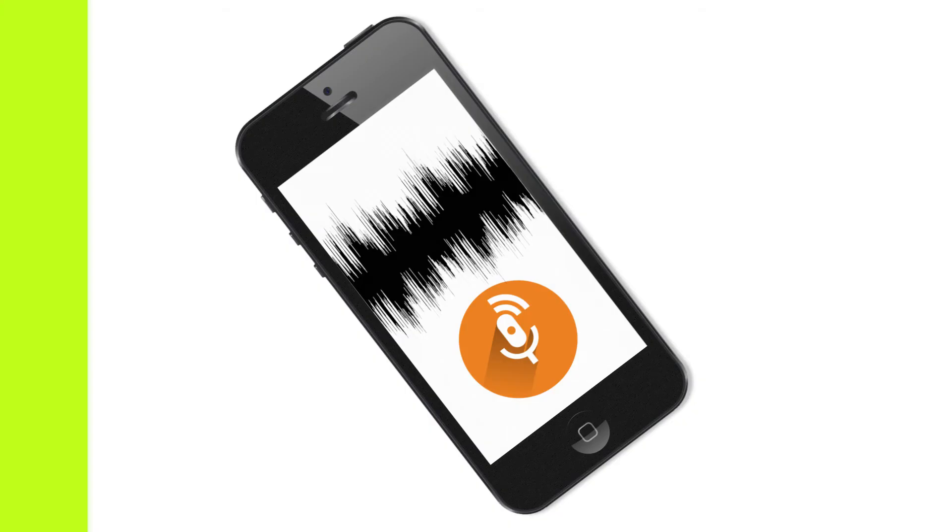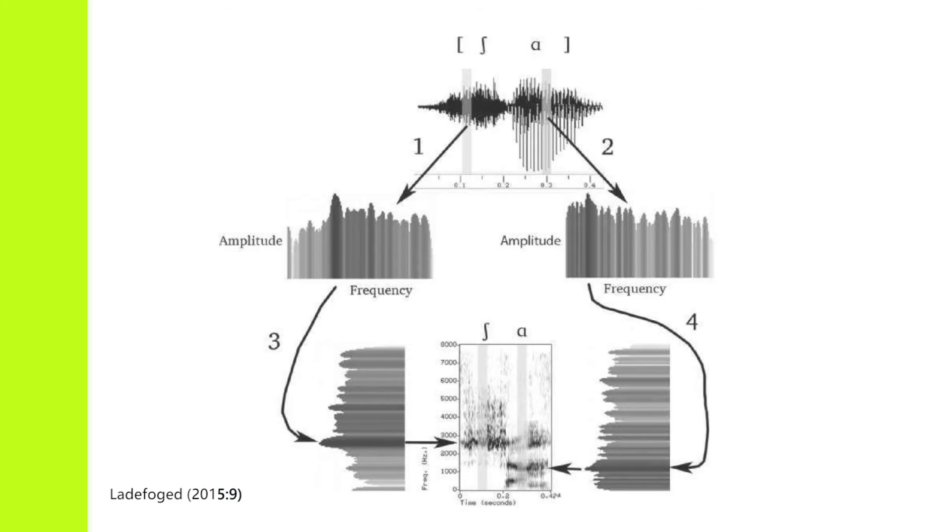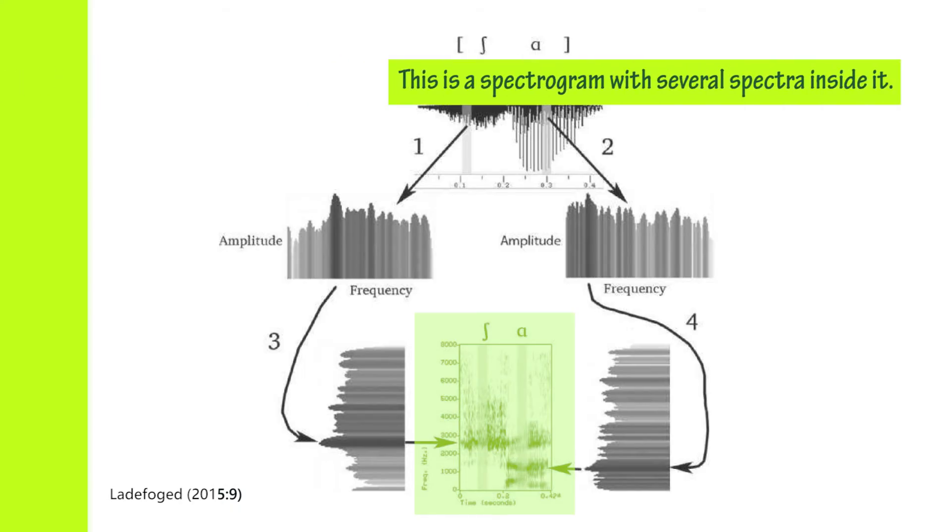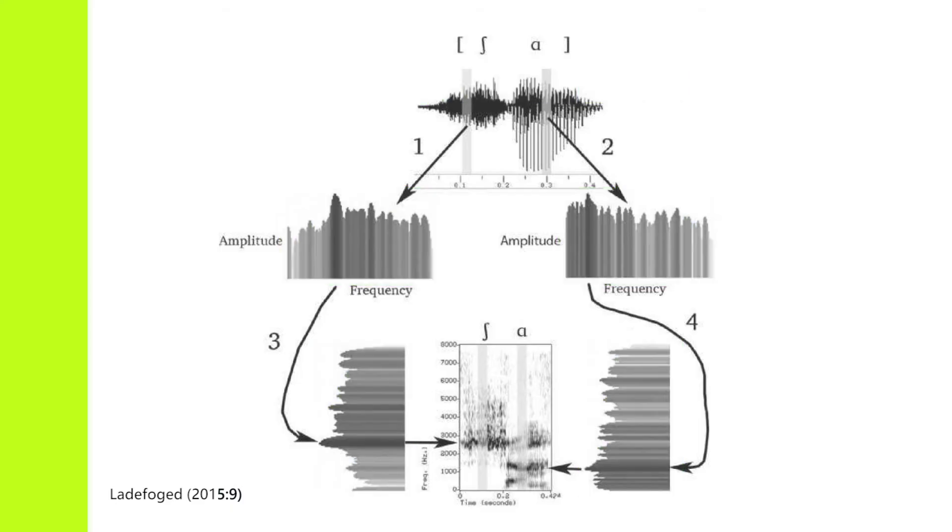you will see the waveform. You might have asked yourself how we produce the spectrogram, and this is how. What you see here is a spectrogram with several spectra inside it. Each of these cutouts is a spectrum. The small pieces of the acoustic waveform are analyzed spectrally. Amplitude